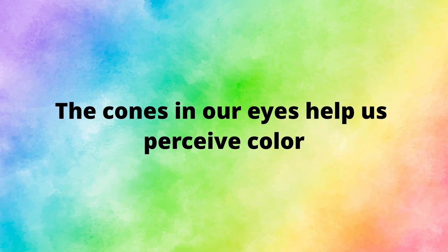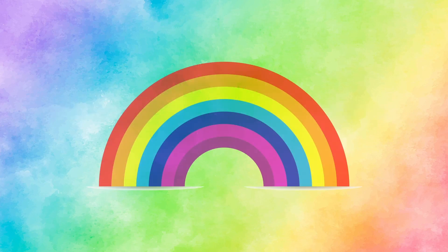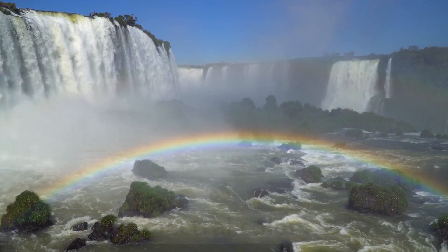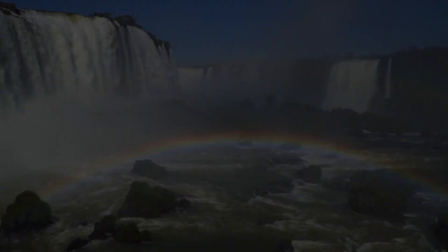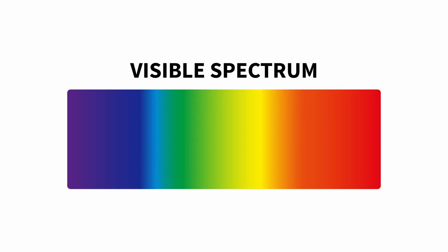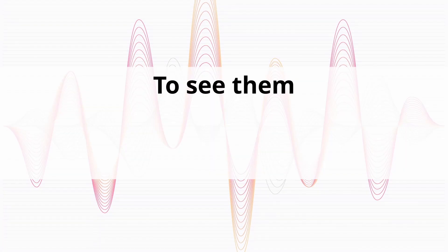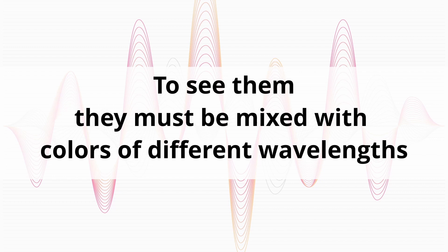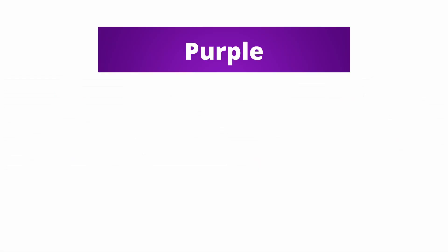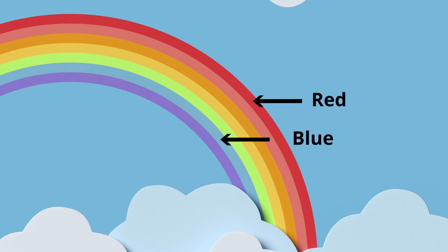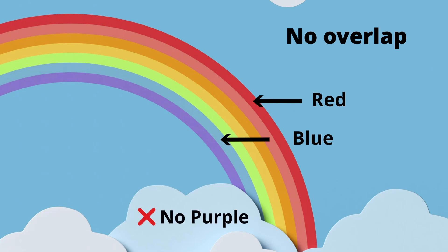The cones in our eyes help us perceive color, but when looking at a rainbow, we still don't see brown, white, black, or pink. Why is that? The colors we see from the rainbow are spectral colors, as these colors are also present in the visible spectrum. Colors like pink and brown, however, don't have their own wavelengths. To see them, they must be mixed with colors of different wavelengths. Consider the color purple, made by mixing red and blue — on a rainbow, look at where the blue and red bands are found. There is no overlapping of bands, so there is no purple on display.